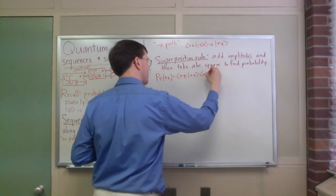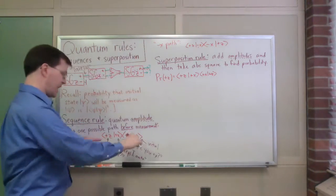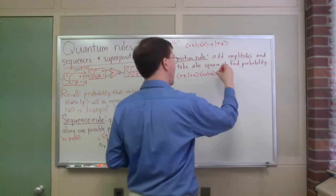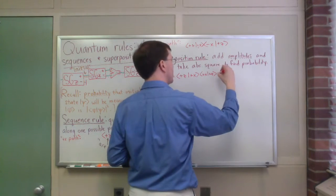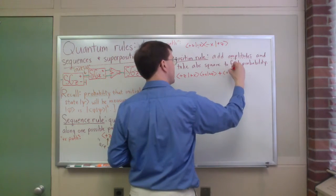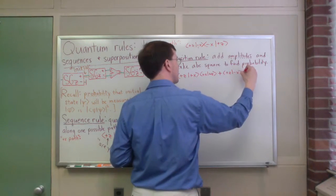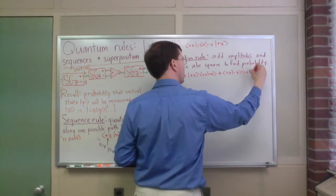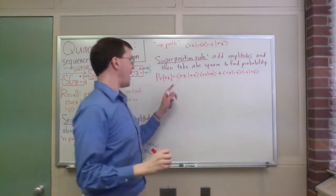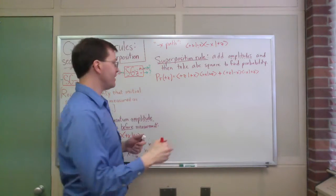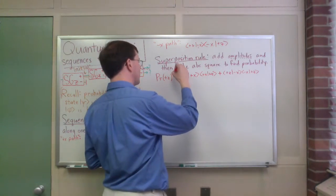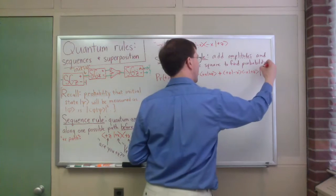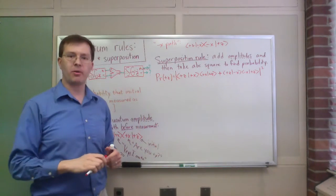That was from this amplitude here. And I add to that this one, plus z with minus x, minus x with plus z. I add those two together, and then I take the absolute square of that sum. And that's how I get my probability.